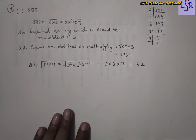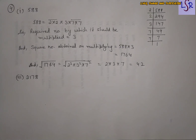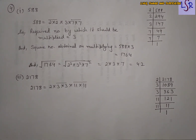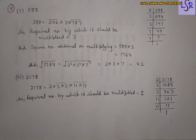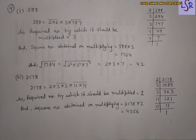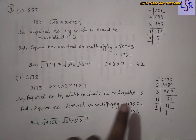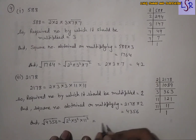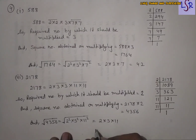Now let's look at the third part: 2178. We take the prime factorization, write the factors in the form of multiples, and after making pairs we see that 2 is left unpaired. So the required multiplier is 2. The square number obtained on multiplying is 4356. Finding the square root: √4356 = √(2² × 3² × 11²) = 2 × 3 × 11 = 66.